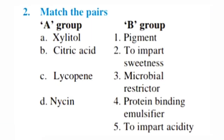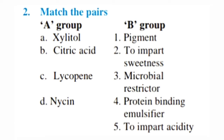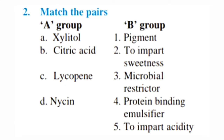Question 2. Match the pairs. Group A: Xylitol, Citric acid, Lycopene, Niacine. Group B: 1. Pigment, 2. Impart sweetness, 3. Microbial restrictor, 4. Protein binding emulsifier, 5. Impart acidity.